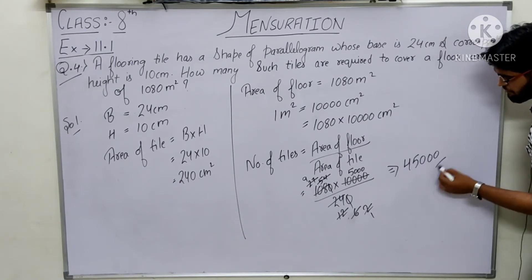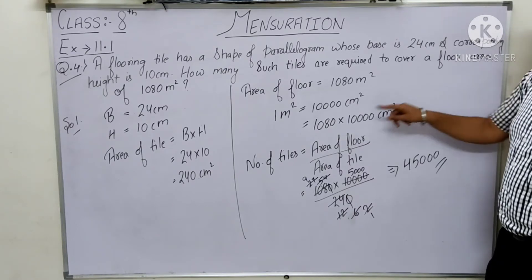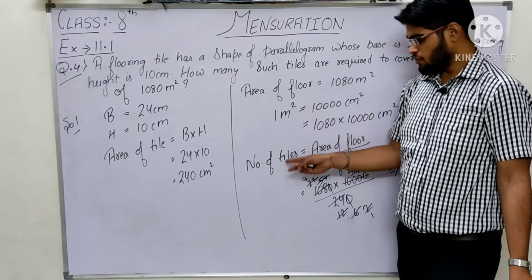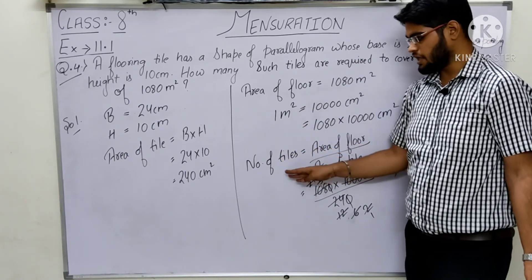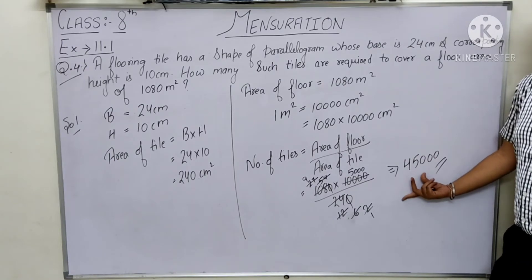So 45,000 tiles will be required to cover the entire floor area. That is 45,000 tiles.